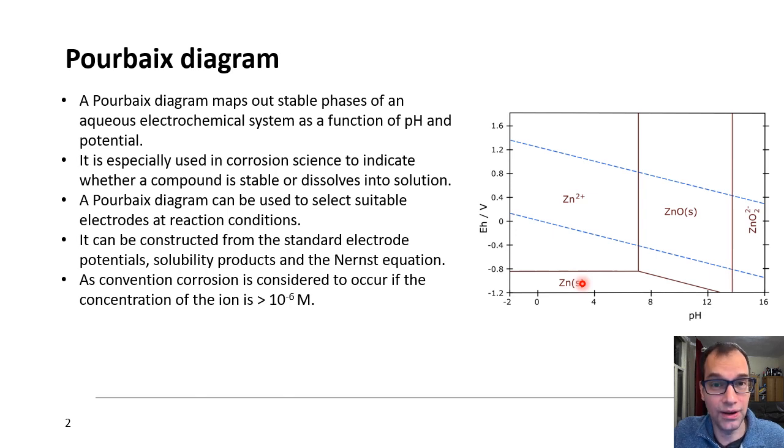Zinc is quite a non-noble metal, so you really need to go to low potentials to enable a stable phase for metallic zinc. So that is also shown by this Pourbaix diagram, but it shows much more. It also shows that at higher pHs you get oxide formation.